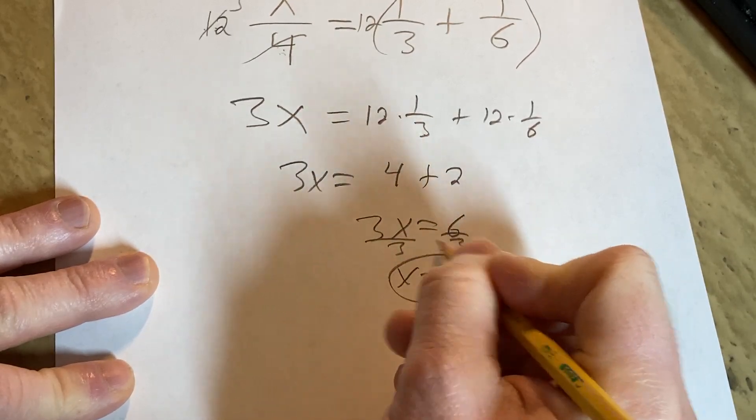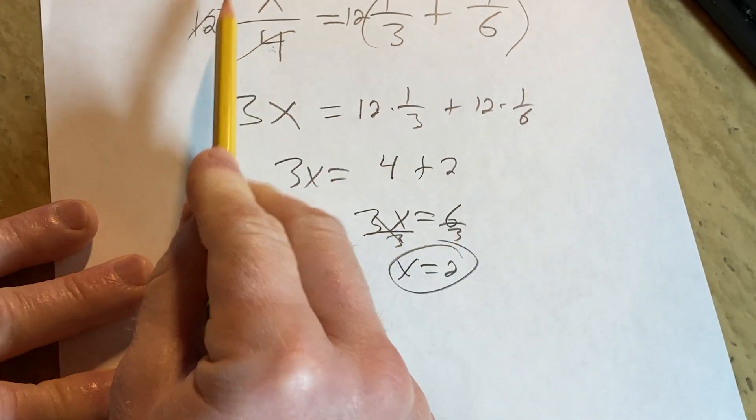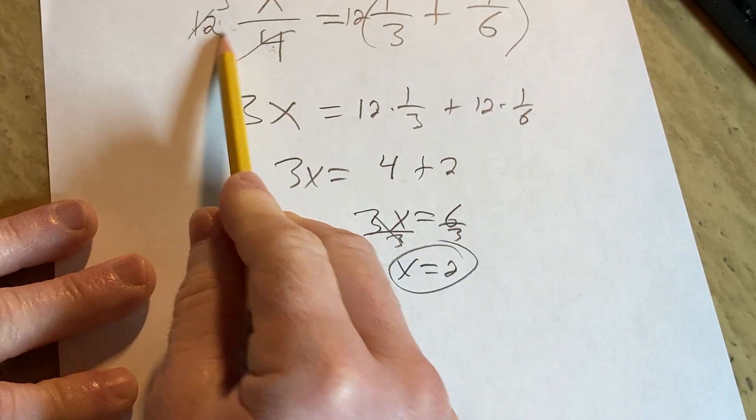Boom. Just divide by 3. Went pretty quick there. But not too bad. Basically, the idea is you want to start by clearing those fractions. Right? Once you clear the fractions...